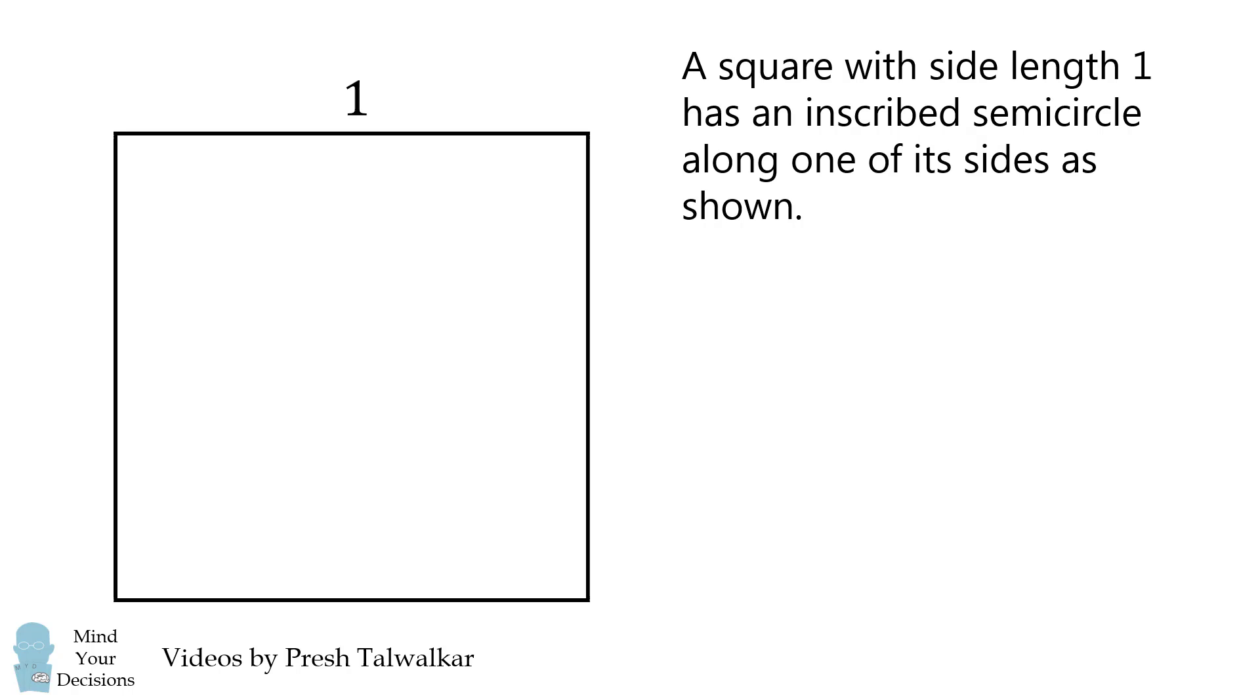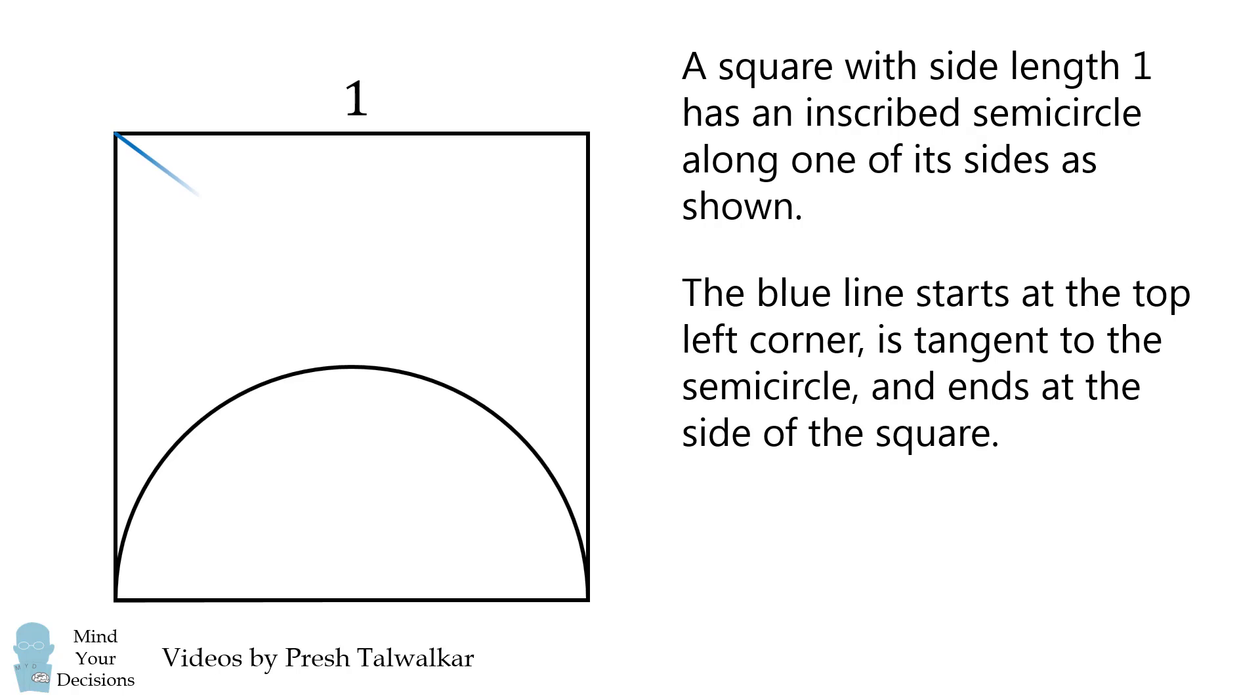A square with a side length of 1 has an inscribed semicircle along one of its sides as shown. The blue line starts at the top left corner of the square, is tangent to the semicircle, and ends at the side of the square. What is the length of the blue line?